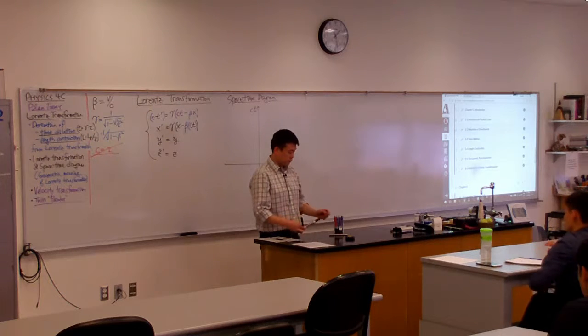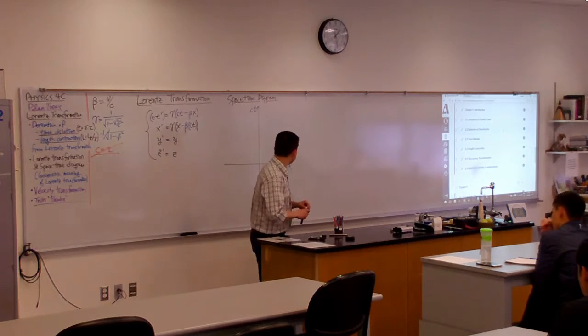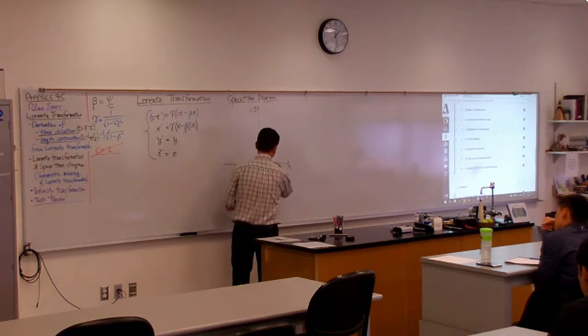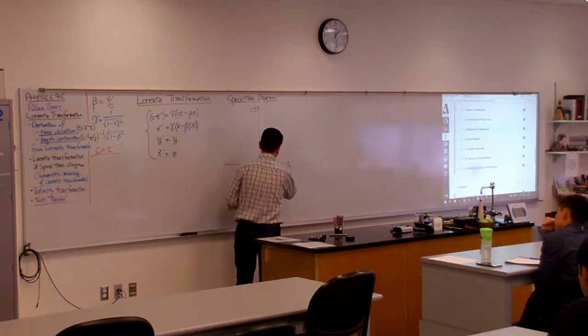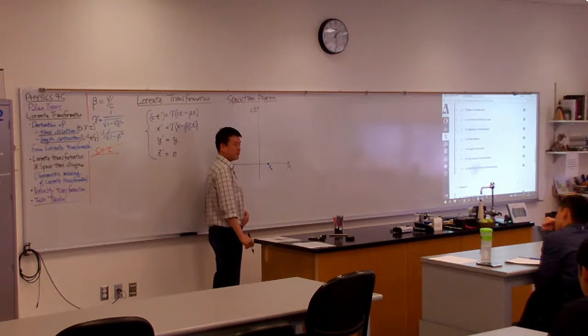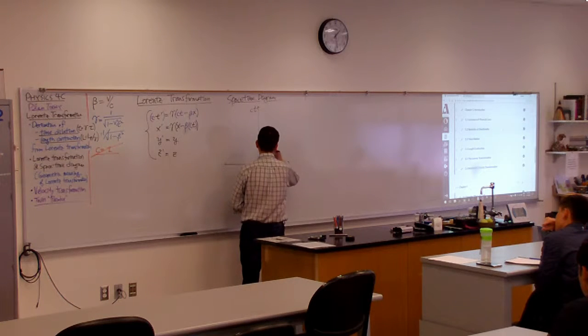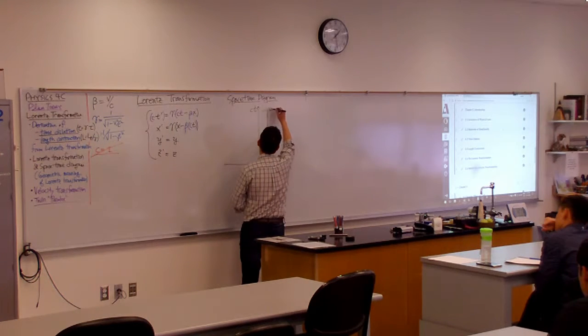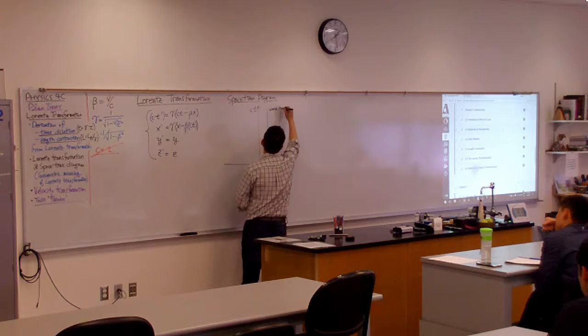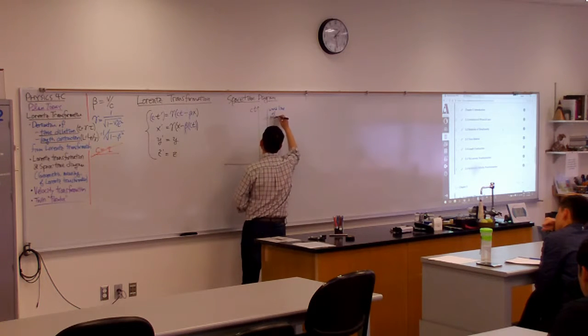And the trajectory would look like, well, it starts out at some value x0, and it just remains at x0, right? So this will be its trajectory. This would be the world line of stationary tape.